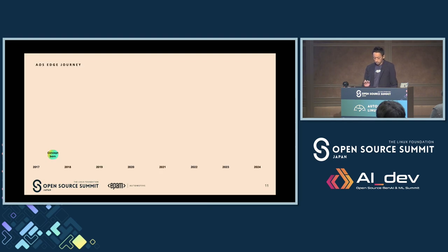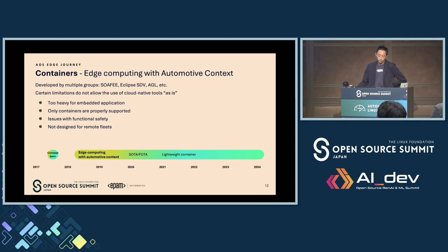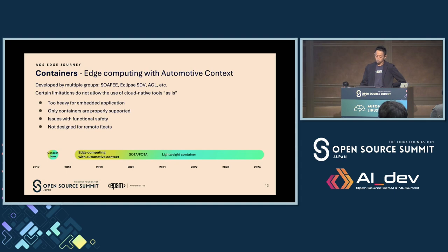The concept was born when Artem's team started thinking about how edge computing should work in the automotive context. We have SOAFEE, Eclipse SDV — they all started work on container concepts. We know there are limitations that don't allow the usual cloud-native tools: they can be too heavy for a limited environment, only containers are supported, there are functional safety issues, and they're not totally designed for remote fleets. We try to conquer those limitations.